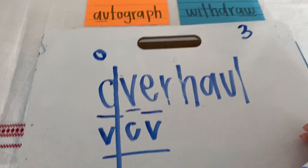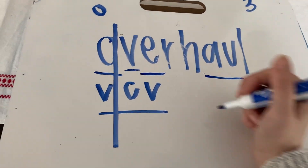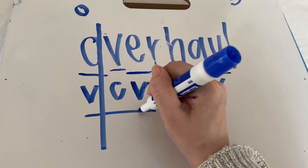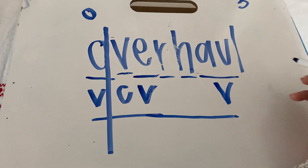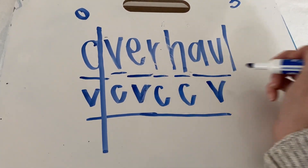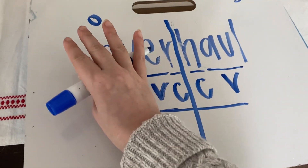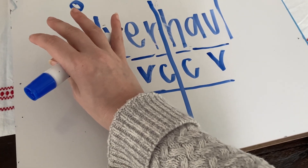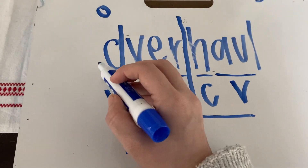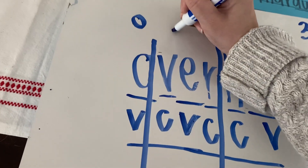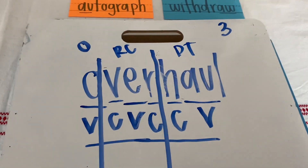Remember, we said we have three syllables, so we need to keep going. Underline the vowels, mark them with the V, draw your bridge, underline the consonants, mark them with the C, split your syllables. Here we have the most common pattern: vowel, consonant, consonant, vowel — and we split between the consonants. So our three syllables are: O (open syllable), -ver (R-controlled), and -haul (diphthong). Overhaul. Great job.